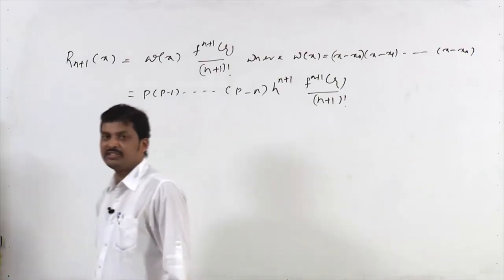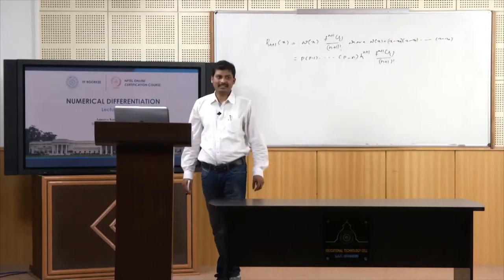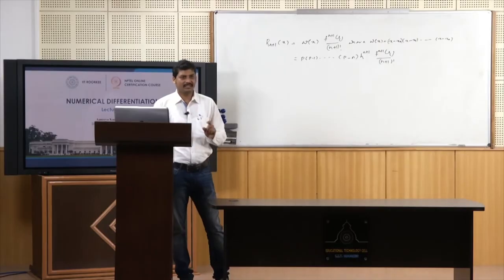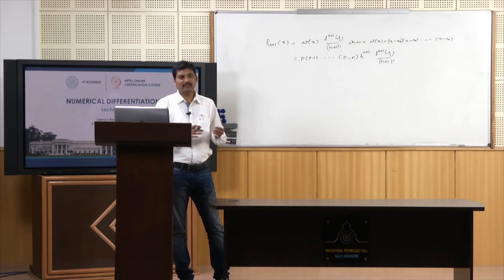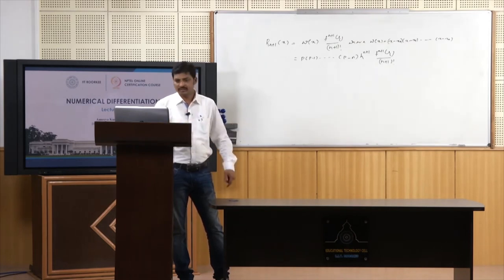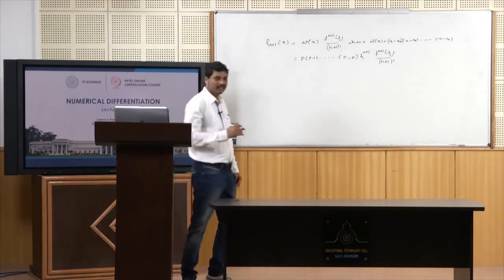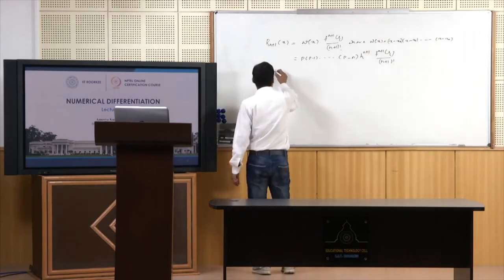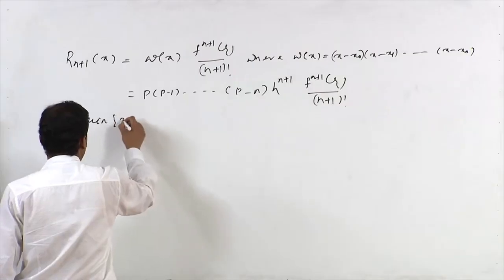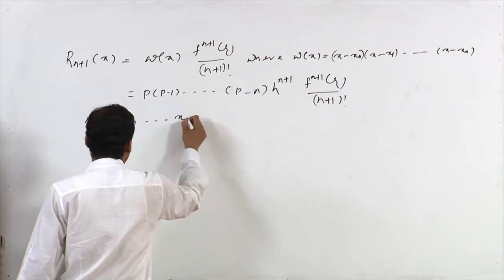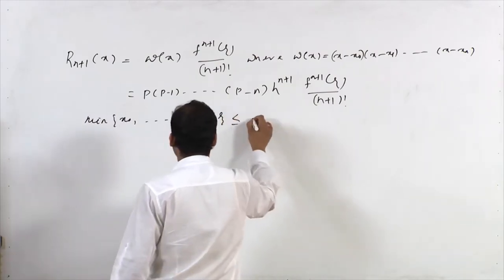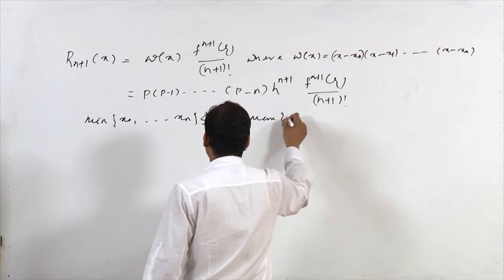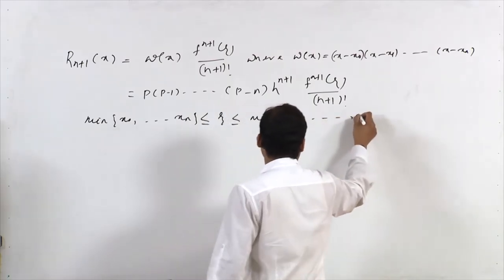In terms of p this can be written as p(p-1)...(p-n) times h^(n+1) times f^(n+1)(zeta) divided by (n+1) factorial, since we express p as (x - x0)/h, replacing terms as p-1, p-2 as discussed in previous lectures. The zeta value is determined such that min(x0,...,xn) ≤ zeta ≤ max(x0,...,xn).